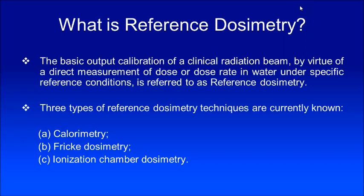What is reference dosimetry? The basic output calibration of a clinical radiation beam by virtue of direct measurement of dose or dose rate in water under specific reference conditions — this is referred to as reference dosimetry. As of today, there are three different dosimetry techniques that are considered to be reference dosimetry.